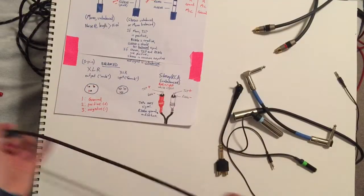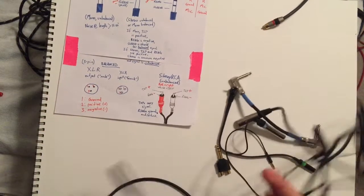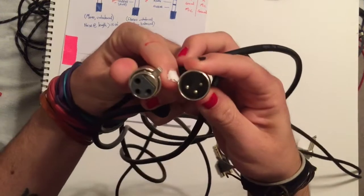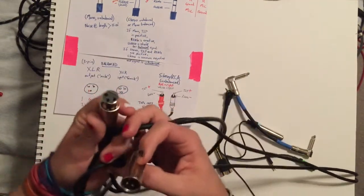Next we have a balanced signal that can be sent through an XLR cable, which is typically used for microphones. Here's an example of the ends of a mic cable. We have the male or output end and we have the female or input end.